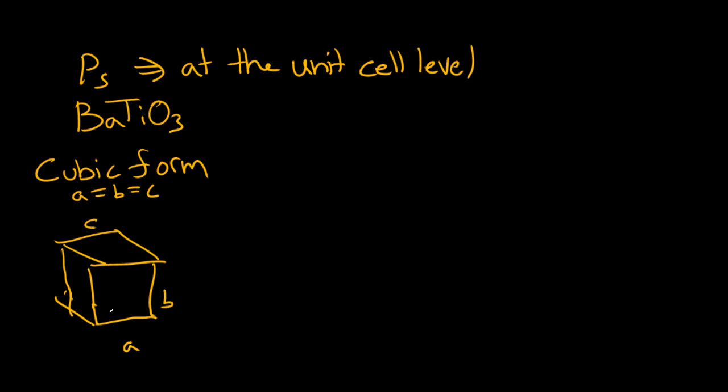We have on every face an oxygen atom. I'm not going to draw this see-through. Then we have on every corner a barium atom. And in the middle, which I'll draw in purple with dotted lines, you have this titanium atom. Obviously you can't see the middle. We have an oxygen on every side, and there's six sides.